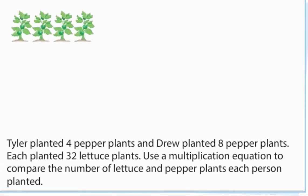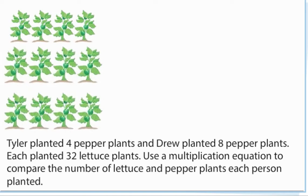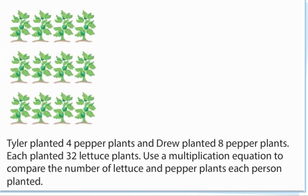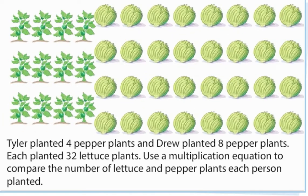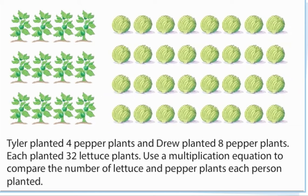Tyler planted four pepper plants and Drew planted eight pepper plants. Each planted 32 lettuce plants. Use a multiplication equation to compare the number of lettuce and pepper plants each person planted.